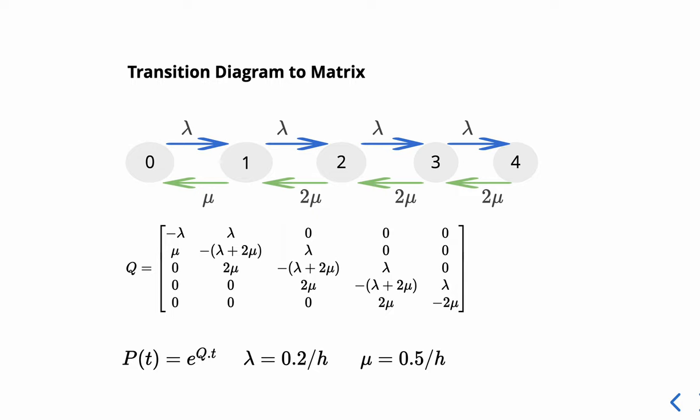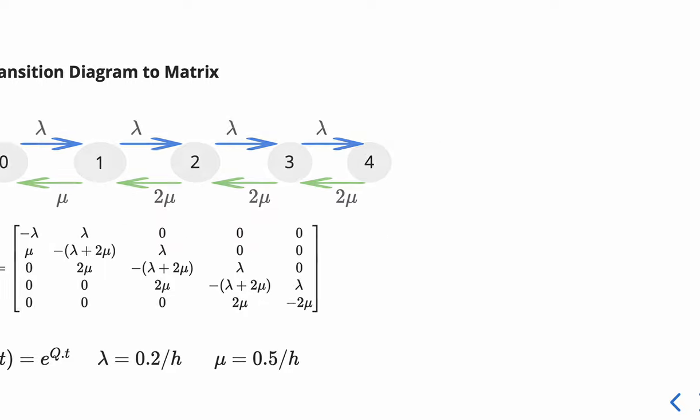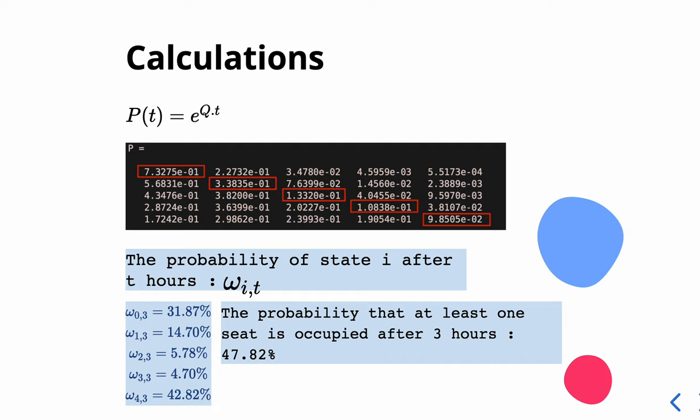We have the formula P(t) equals e to the power of Qt. The calculation is as you can see. The probability of state i after t hours is ω_{i,t}.